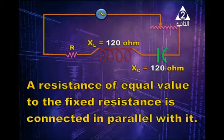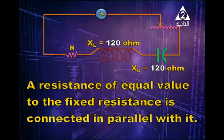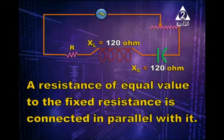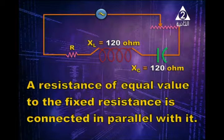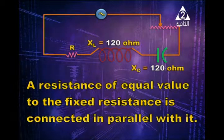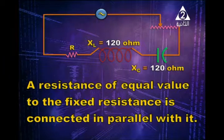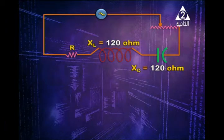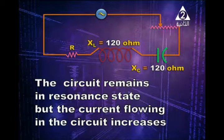What happens when a resistance of equal value to the fixed resistor is connected in parallel with it? The circuit is in a state of resonance because XL equals XC — inductive reactance equals 120 ohm and capacitive reactance equals 120 ohm. When a resistor is connected in parallel to R, the total equivalent resistance decreases and current increases, but the state of resonance remains unchanged. The circuit remains in resonance but current increases.